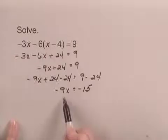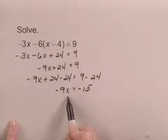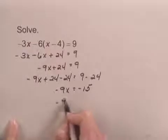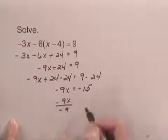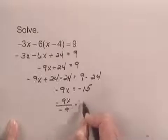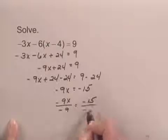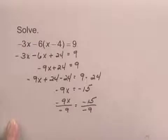And now we see that if we divide both sides of the equation by negative 9, we'll have x alone on the left-hand side. So we have negative 9x divided by negative 9 equals negative 15 divided by negative 9.